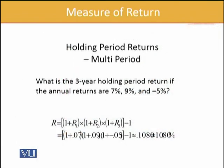We can also calculate holding period returns for a multi-period. Like, if you are given small period returns, you are required to calculate the return for the whole period. For example, what is the three-year holding period return if annual returns are 7%, 9%, and minus 5%? As I mentioned, it could be negative as well. So to calculate, we take (1 + R1) × (1 + R2) × (1 + R3) − 1. This comes out to be a return of 10.8% over the period — that is our three-year holding period return.